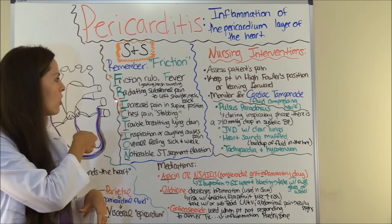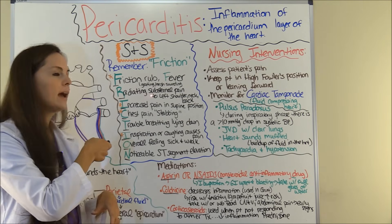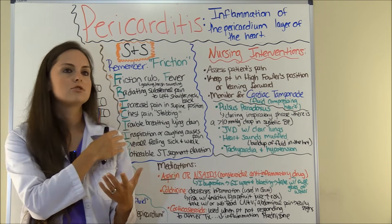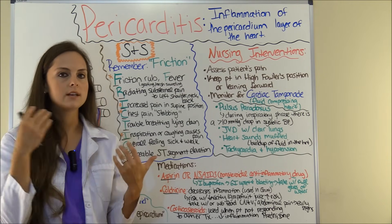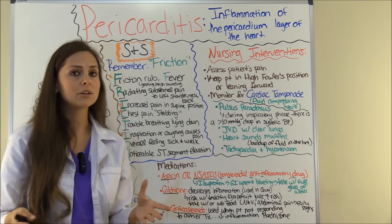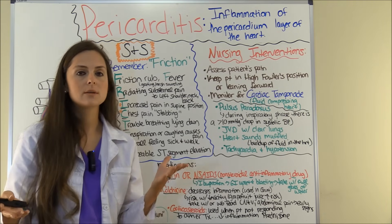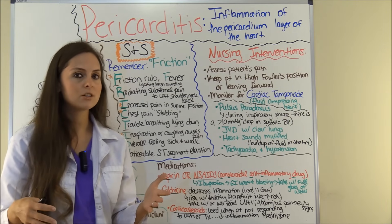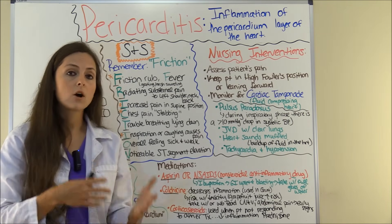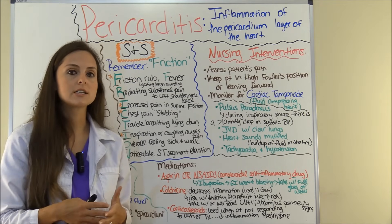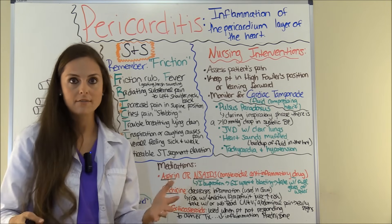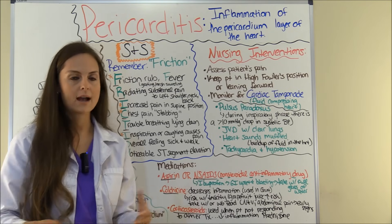R is for radiating substernal pain that can radiate to the left shoulder, the neck, and the back. It's very similar to the pain a patient may have during a myocardial infarction, so the patient will probably think they are having a heart attack.